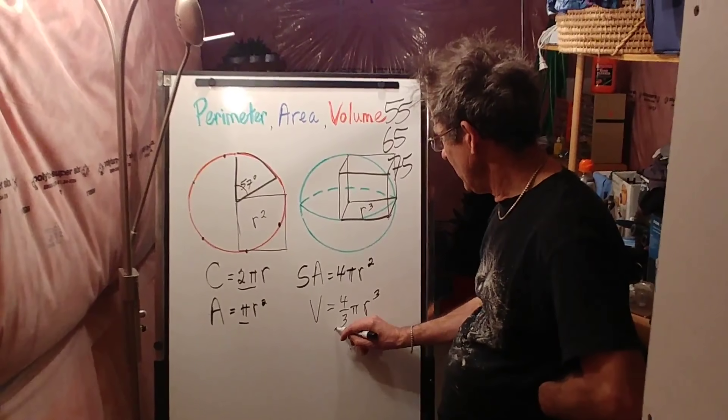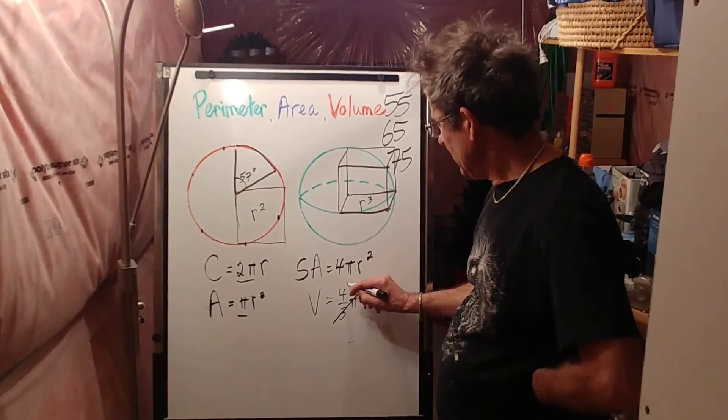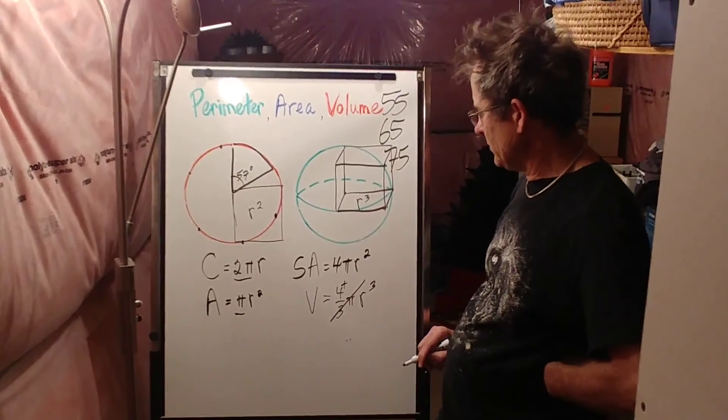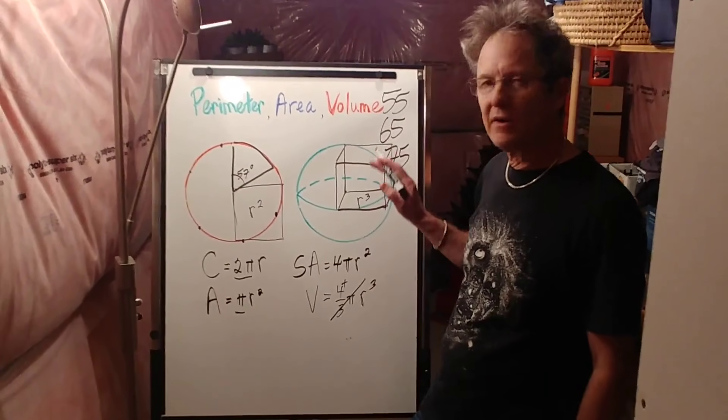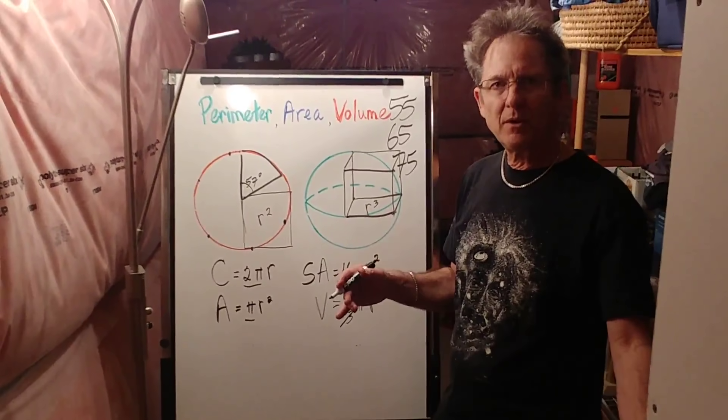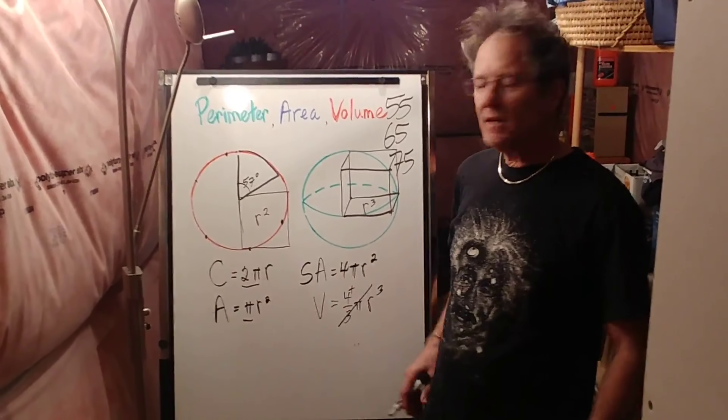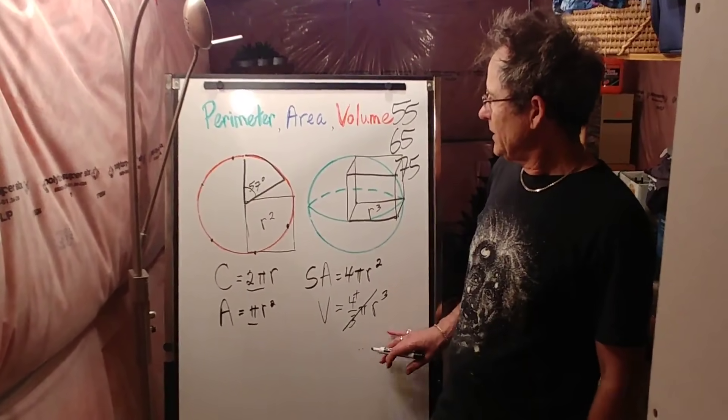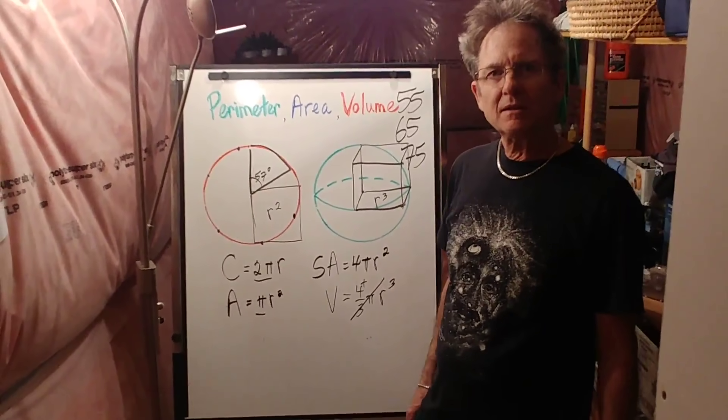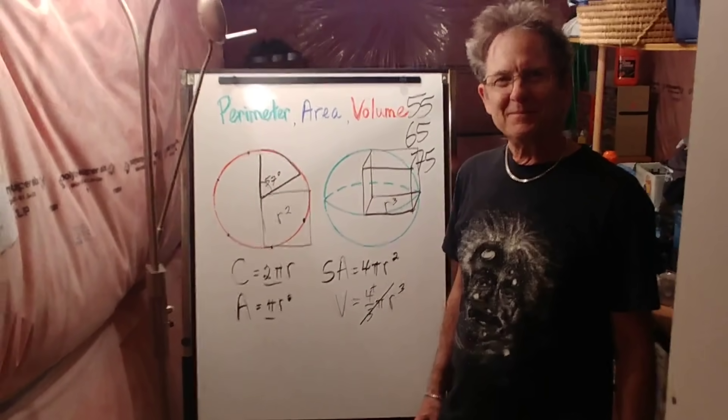Now, the π almost cancels the three, so there's just a little bit more than four. So when you're dealing with perimeter, area, and volume, keep it simple, use common sense, and it'll be a lot easier to remember the formulas. See you next time.